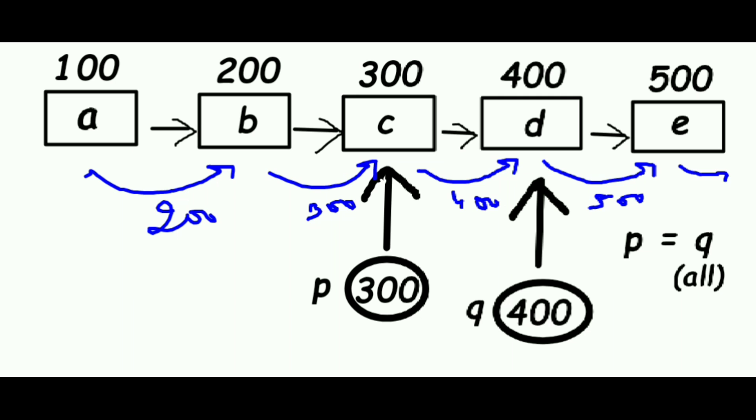And D points to E which has the location 500. E actually doesn't point to anything, so E points to null.